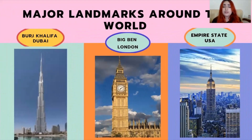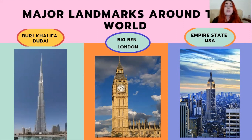Now let's learn about some major landmarks around the world — they may come in use when you visit them. First off, we have the Burj Khalifa, located in the city of Dubai in the UAE. Translated to English, Burj Khalifa means the Tower of Khalifa. Sheikh Khalifa is the president of the United Arab Emirates, which is where this tower is located and whom it is dedicated to.